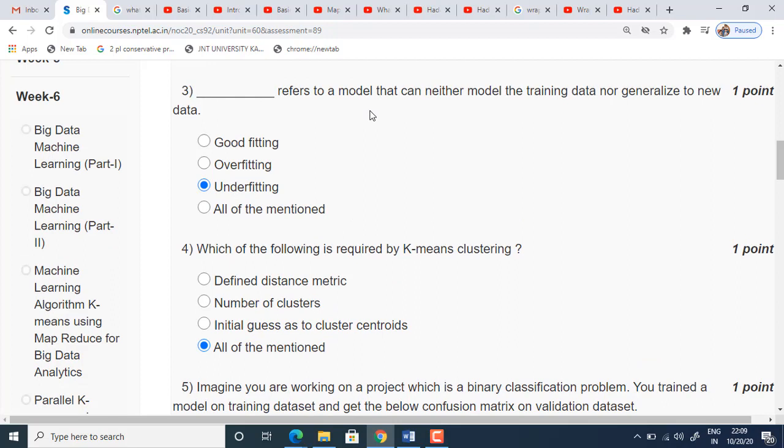Coming to the third question, dash refers to a model that can neither model the training data nor generalize to new data. That is called underfitting. In underfitting, the model won't be generated, there won't be any model generated as well as we cannot generalize that model to new data. That is called underfitting.